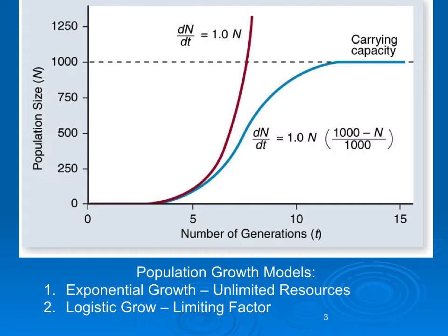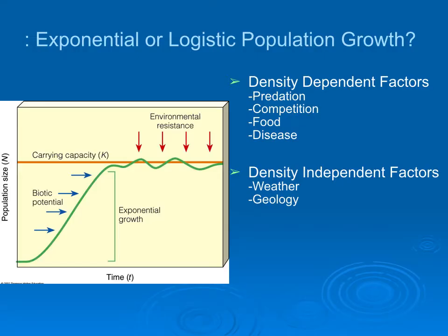There are two basic models of population growth. One is a model of growth at a steady rate that causes populations to increase rapidly — this is called exponential growth, and it happens when populations are not limited by resources, so new populations often grow rapidly like that. Then there are populations that grow rapidly for a while but slow as they reach a certain limit, where limiting factors like food, disease, space, or competition determine the carrying capacity. These are the exponential and logistic population growth models.